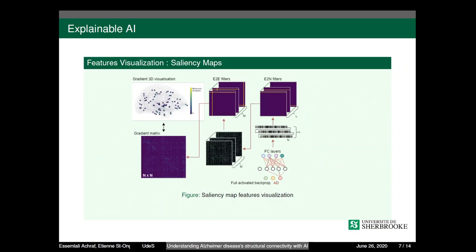We used the trained model along with features visualization and ablation analysis in order to understand Alzheimer's disease using explainable AI. We used saliency maps by retro-propagating the gradient descent over the average of true positives of each class, as shown in the gradient 3D visualization in the figure.